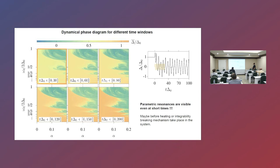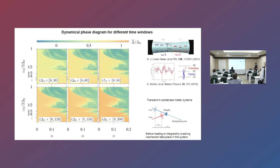Even at very short times — say three or four drive cycles — you already see the main features of this parametric resonance. The phase diagram computed at different time windows (30, 60 cycles, etc.) converges to the parametric resonance structure shown before. Importantly, even before heating or other decoherence mechanisms take effect, you can already see these features. This opens the door to exploring parametric phenomena not only in highly controlled systems like cold atoms or cavity QED, but also in conventional superconductors as a transient effect.